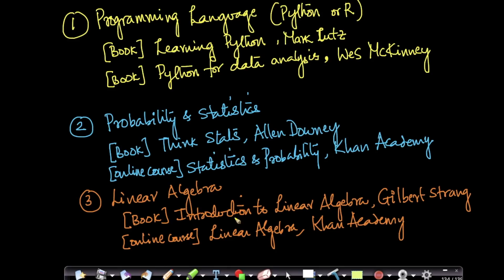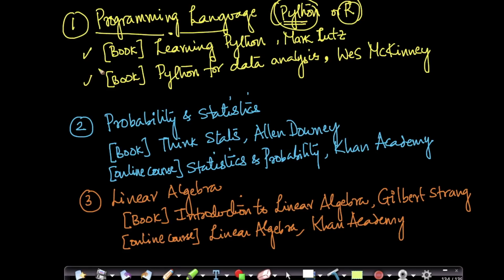Here is a list of topics with references to help you. The first topic is you need to know a programming language — preferably Python or R. Python is a very general purpose language; R is a very statistical language. My personal preference has always been Python because it's much easier to write code. For those who know C or C++, Python should be very easy to pick up. There are two very nice books.